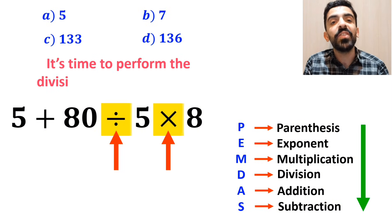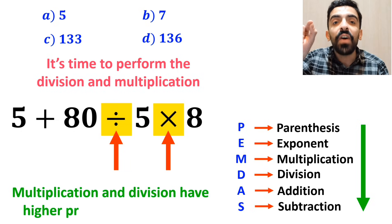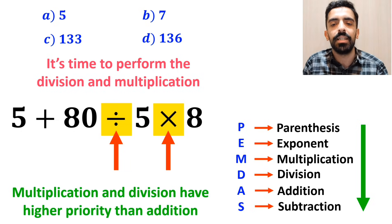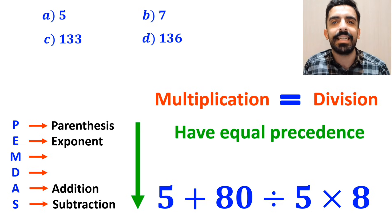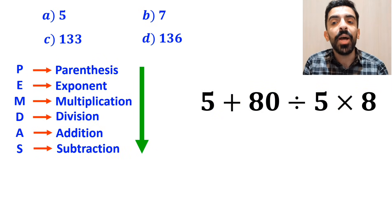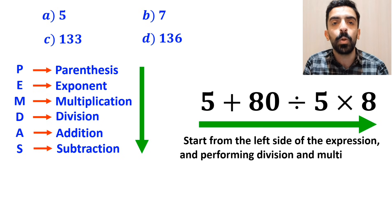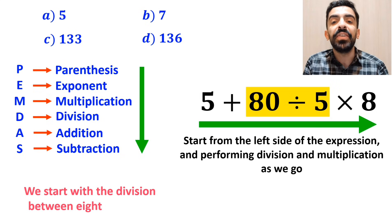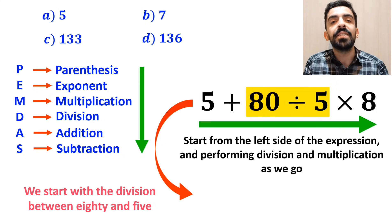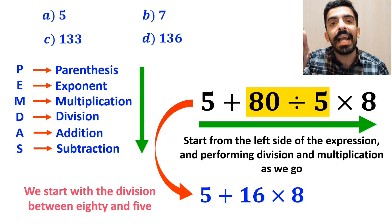Now it's time to perform the division and multiplication, because multiplication and division have higher priority than addition. However, we must pay close attention that multiplication and division have equal precedence. In this case, the best thing to do is to start from the left side of the expression, performing division and multiplication as we go. So, we'll start with the division between 80 and 5, and instead of this expression, we can write 5 plus 16 multiplied by 8.